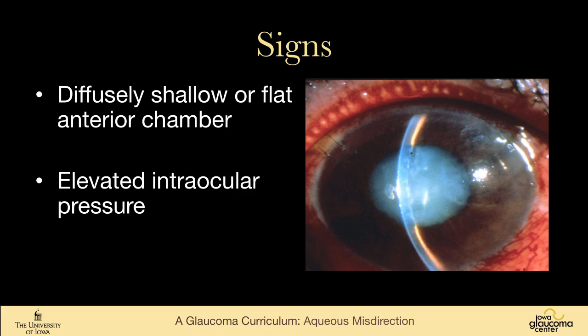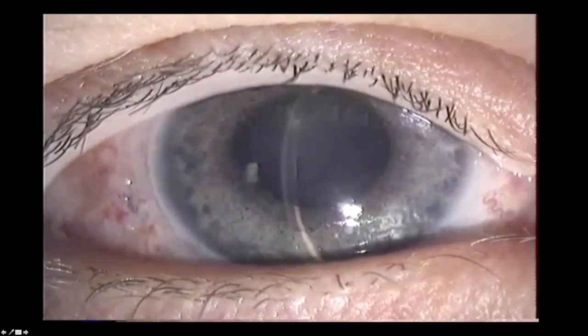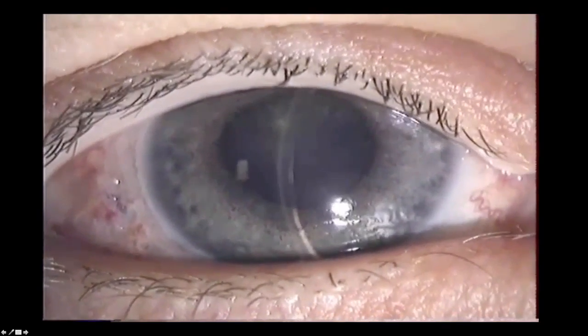What we see is a diffusely shallow or flat anterior chamber. In the picture on the right, there is a little tiny bit of an anterior chamber, but the iris is right up against the cornea — there's no iris bombé. The entire anterior chamber is shallow to flat, and the pressure is usually quite elevated, although it can be normal. On gonioscopy, you can see the ciliary body because the lens is so far forward.